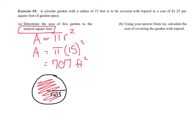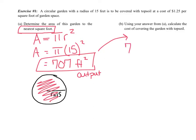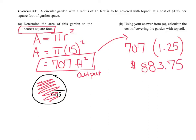So basically, I evaluated my first function. Part B says, using your answer from A — I'm taking this output I got and inputting it into this problem. Calculate the cost of covering the garden with topsoil: 707 feet squared times $1.25, giving us $883.75. You just composed two functions. You took an input of 15 feet, got output 707, used that as input into the next problem, and got output $883.75.